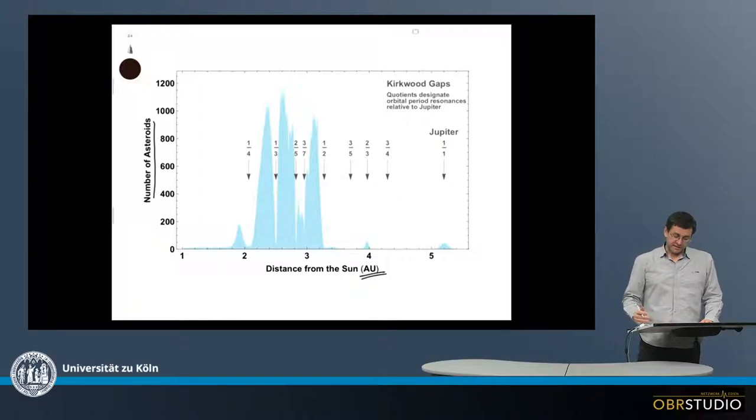We see a number of peaks and gaps along the x-axis. Here is a peak with lots of asteroids at almost two astronomical units, and another one here at around five astronomical units, which is where Jupiter is.